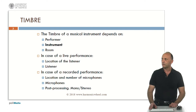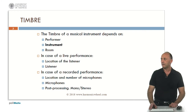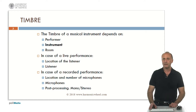The timbre of a musical instrument depends on the one hand on the performer, the instrument itself and the acoustic room. And on the other hand, in case of a live performance, on the location of the listener and the listener himself or herself. And in case of a recorded performance, on the location and number of microphones, the type of microphones and the post-processing. The result can be mono or stereo.